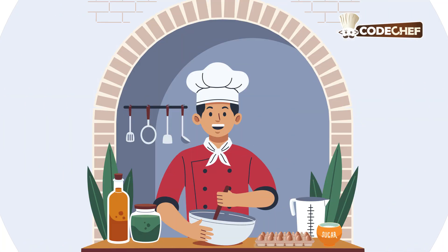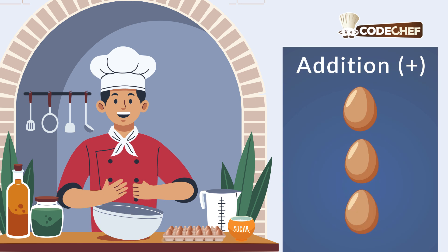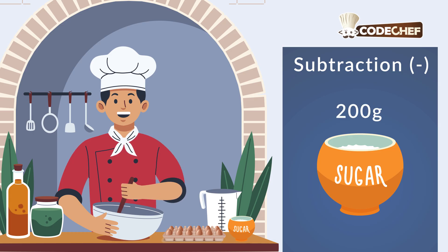Think of it like baking a cake. You have a recipe that calls for whole ingredients. Adding ingredients is like addition — you have two eggs, you add one, now you have three. Using up ingredients is like subtraction: you start with 200 grams of sugar and use 50, leaving you with 150.